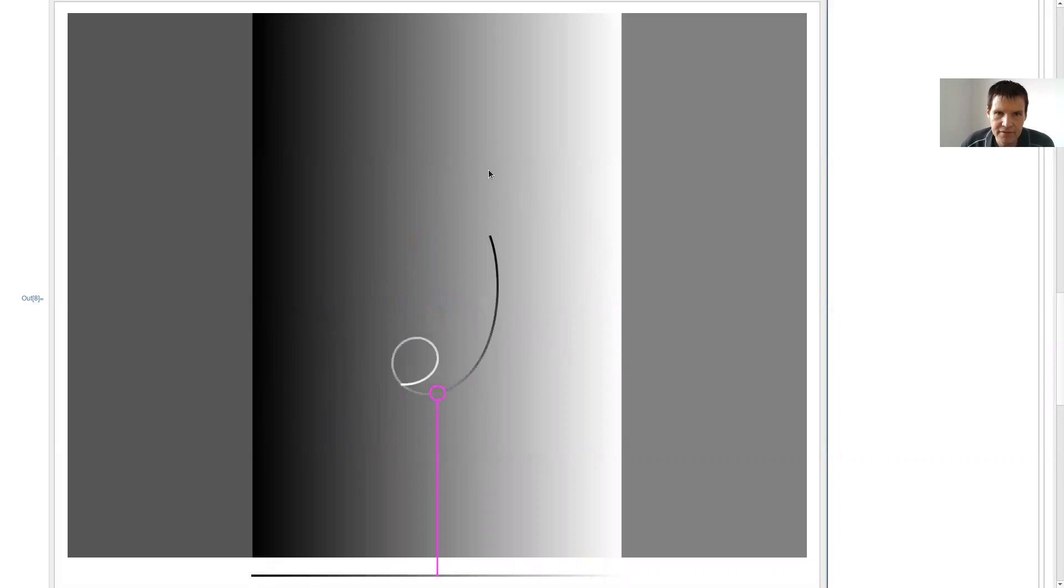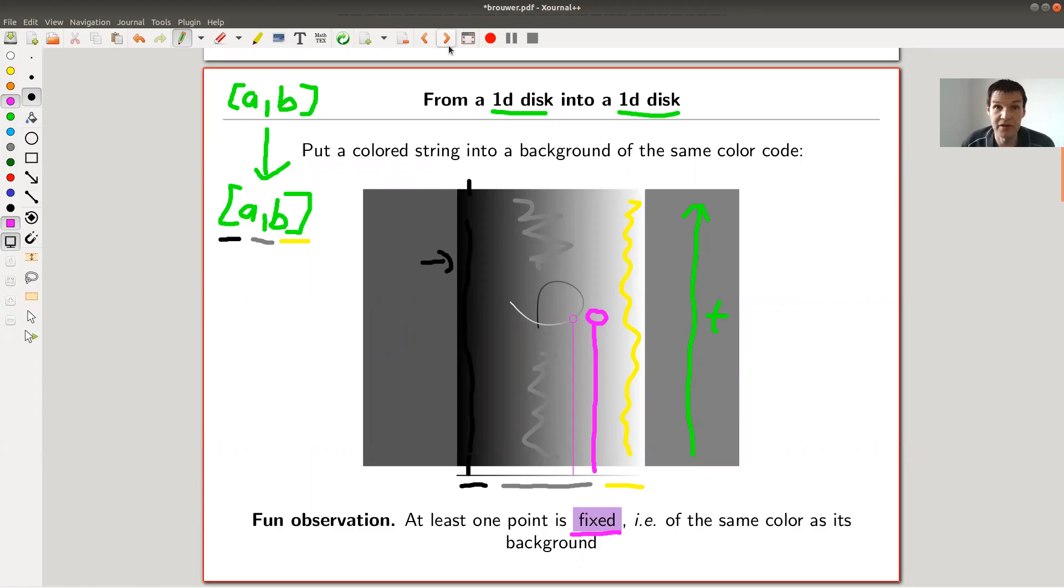And no matter what I do, as you can see, there will always be a fixed point. And it kind of continuously moves with my movement of the line. But I think this is a pretty cute illustration of Brouwer's fixed point. There will always be one point which is above another point of the same color. That's exactly the fixed point.